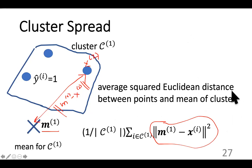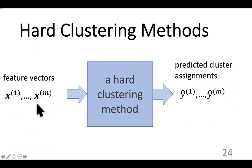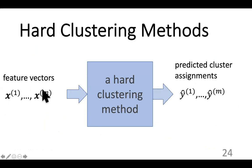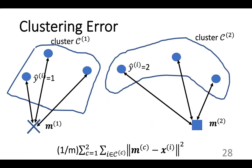The most important difference between hard clustering and classification is that hard clustering only needs feature vectors as input, whereas classification methods like logistic regression or decision trees also need label values for the training data points. In clustering we don't need any labels.